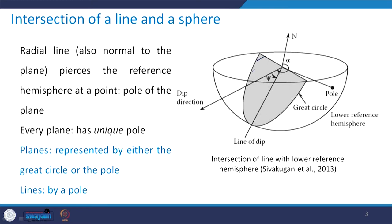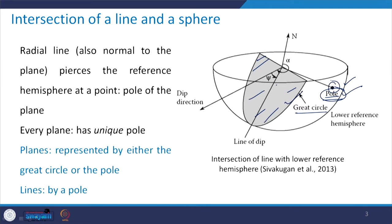In other words, when you have a line which is perpendicular to a plane, it intersects the hemisphere at a particular point called the pole — this is also called the pole of a plane. Remember, every plane will have a unique pole because the normal to it is unique and its intersection with the sphere is unique. Planes are represented either by a great circle or a pole, and lines are represented by a pole.